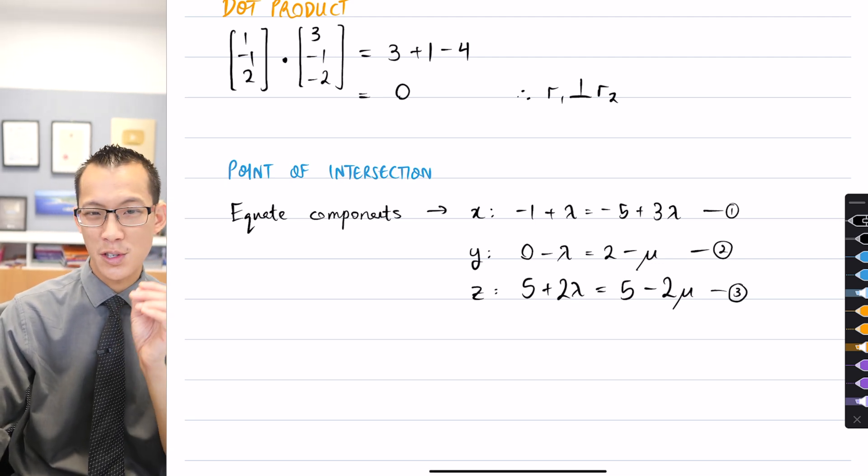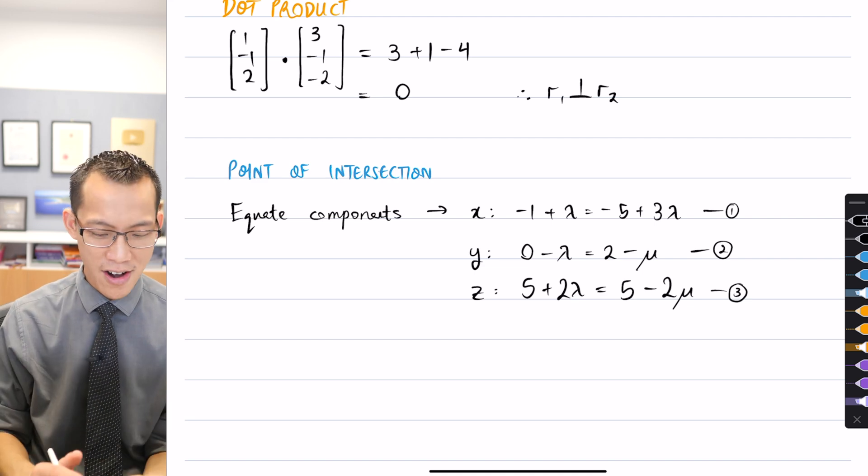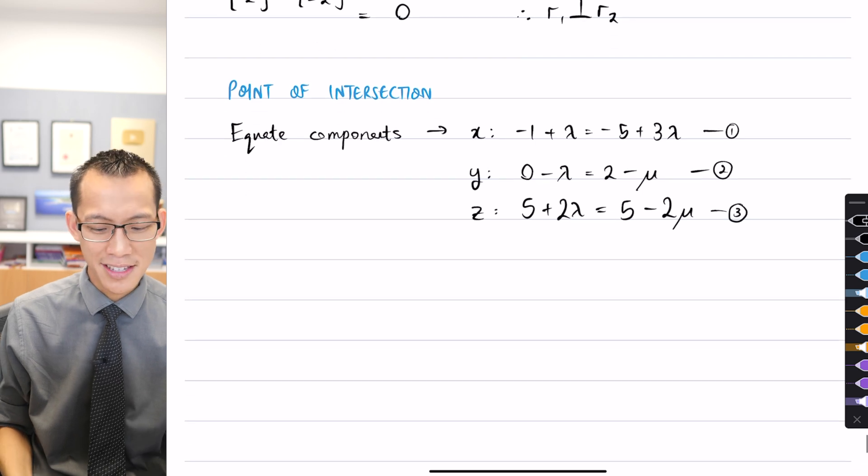Now remember, I'm now in the mode of solving simultaneously, and we saw before I've got three equations, two variables, so I can choose. Which equations would you like to do? Which ones feel easily set up?